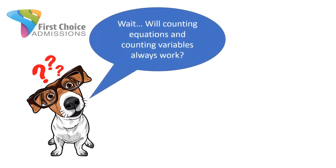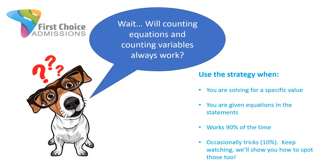I know what some of you are thinking: really, all I have to do is count equations and count variables — is this always going to work? The short answer is yeah, darn near always. You're going to use this strategy when you're being asked to solve for a specific value and you're given equations in the statements — sometimes as math equations, sometimes in word problem form, just like our example. This strategy will work about 90% of the time. Occasionally, maybe 10% of the time, they might try to trick you — but don't get paranoid. If you keep watching the videos, we'll show you how to spot when they're trying to trick you.